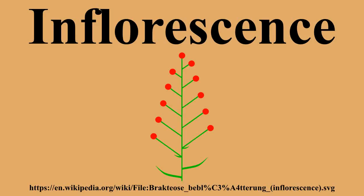With two secondary axes: dichasial cyme or dichasium. With secondary axes as monochasia: double scorpioid cyme, double helicoid cyme. With more than two secondary axes: pleiochasium. A cyme can also be so compressed that it looks like an umbel — strictly speaking this is called an umbelliform cyme, although it is normally called simply umbel. Another kind of determinate simple inflorescence is the raceme-like cyme or botryoid, which is a raceme with a terminal flower. A reduced raceme-like cyme that grows in the axil of a bract is called a fascicle. A verticillaster is a fascicle with the structure of a dichasium, common among the Lamiaceae. Many verticillasters with reduced bracts can form a spike-like inflorescence commonly called a spike.